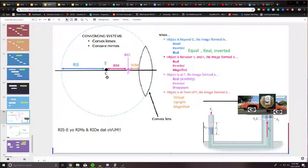Now, if the object is placed on C, it's going to be equal, real, and inverted. If the object is placed between C and the focal point, then the image formed is going to be real, inverted, and magnified.